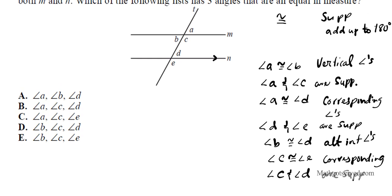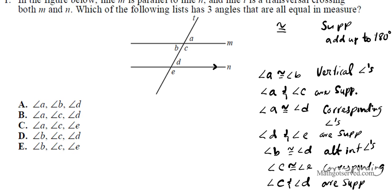So how do we solve this problem? Here is a general rule of thumb: if you have two parallel lines cut by a transversal, if the angles look the same, they are congruent 99% of the time. If they look different, they are supplementary. It's always going to be one or the other — either congruent or supplementary. So we're looking for three angles that are congruent. Angle A and angle B are congruent because they are vertical angles. Angle B is also congruent to angle D — they are alternate interior angles. So angle A, B, and D are congruent, which tells me that option A is the answer.